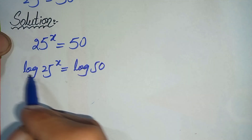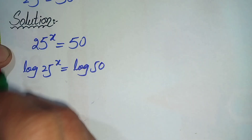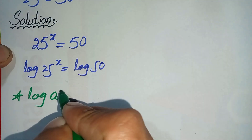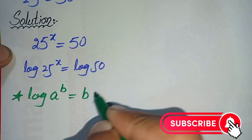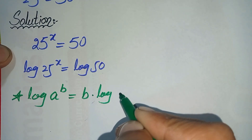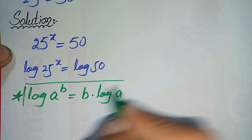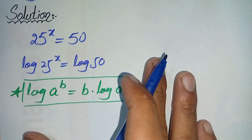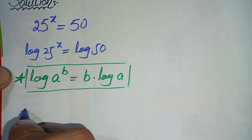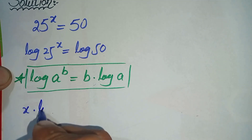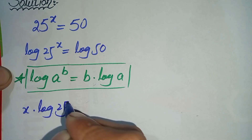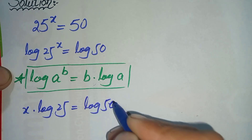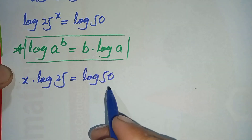Now on the left-hand side we will use a famous logarithm property: log of a raised to power b can also be written as b times log of a. By using this property, x moves to the front, so the equation becomes x times log of 25 is equal to log of 50.